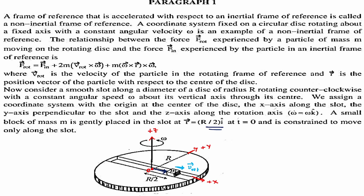The force experienced by the particle in the rotational frame, F_rotational, is the net force acting on it. This equals F_inertial plus 2m·v_rotational×ω plus m·ω×r×ω. Let me break this into three components: F_inertial, F_dash (which is 2m·v_rotational×ω), and F_double_dash (which is m·ω×r×ω). Together these equal F_rotational.